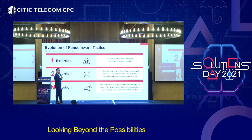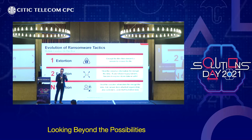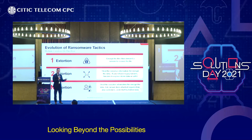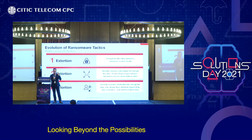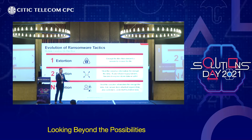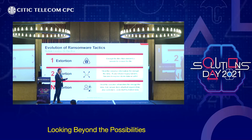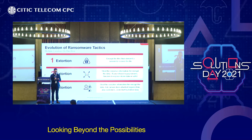How about N-times extortion? It means they encrypt your data, they steal it, and if you refuse to pay the ransom, they will demand ransom from your company, your family, your friends. They have your family information, your company information — causing a lot of reputation damage and financial loss to you or your company.